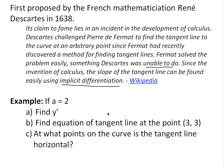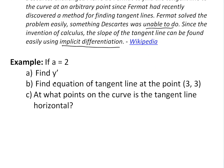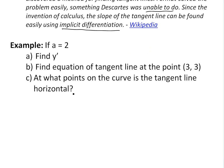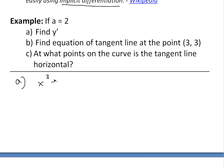So let's get to the example. The example in my calculus book states: if a is 2 — so we just use that constant — find the general derivative for part a, and part b is find the tangent line at the point (3, 3), and then part c is at what points on the curve is the tangent line horizontal. So let's look at part a first. The equation we get is x cubed plus y cubed equals 3 times 2, which is 6, so 6xy.